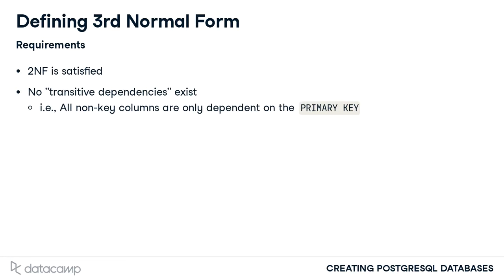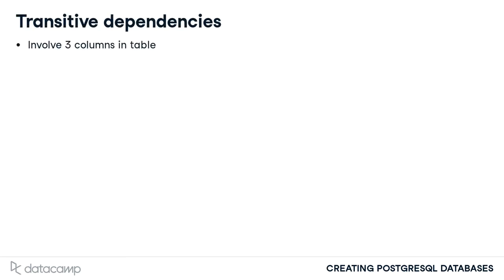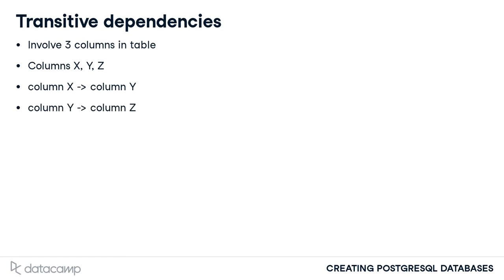Transitive dependencies are relationships within a database table that involve three columns. Imagine a table exists which has multiple columns: x, y, and z. Column y is determined by column x, so if we know the value of column x, column y is also known. In this scenario, the same relationship structure exists between column y and column z — knowing the value of column y removes all ambiguity about the value of column z. The transitive dependency in this case is between column x and column z. Knowing the value of column x leaves no ambiguity about the value of column z due to both columns' relationship to column y. This is the case even though column x and column z are not directly related.